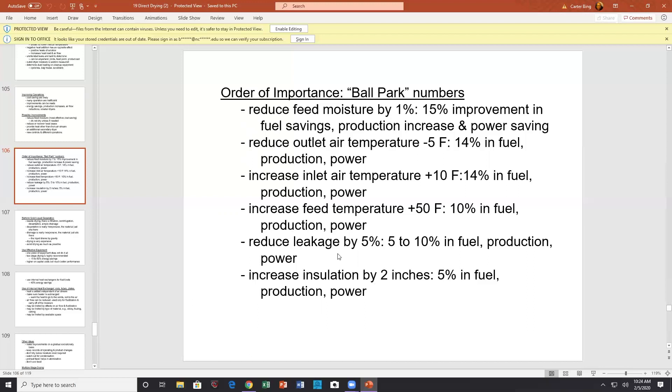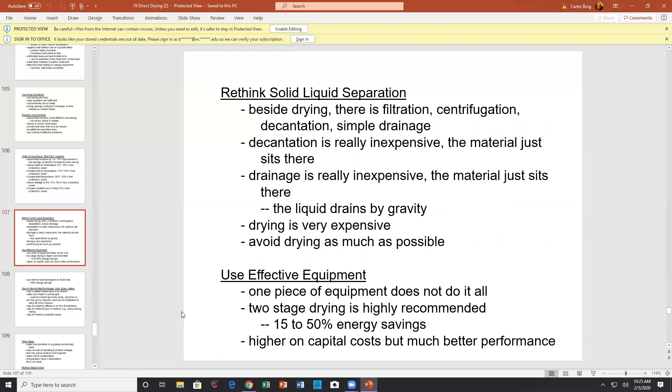If you haven't noticed, for example, out of a crusher or grinder operation, you have this powder. Because it received significant amounts of energy going through the crusher or grinder, then you turn around and try to dry it, the drying is significantly improved because mechanical crushing and grinding the powder is highly inefficient. Lots of the energy leaves with the product stream and the crusher. So you don't want to cool down the powder when you're going to turn around and dry it. Rethink solid liquid separation. Besides drying, there's filtration, acidification, decantation, which is another simple drainage. Decantation is really inexpensive. Drainage is really inexpensive. Drying is very expensive. Avoid drying.